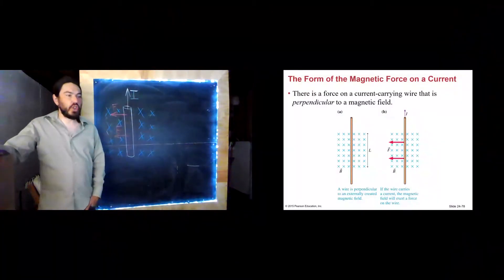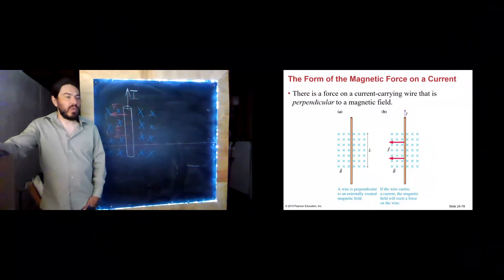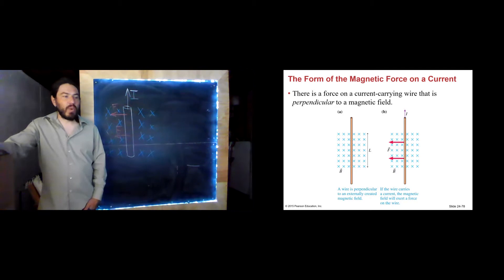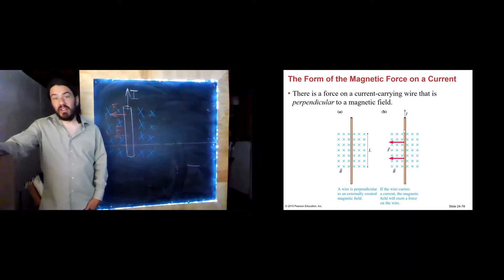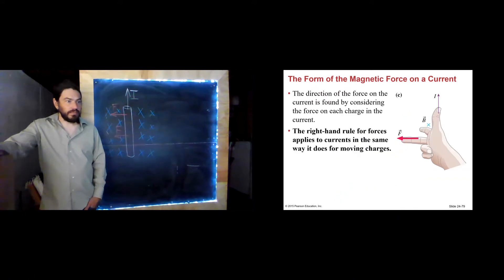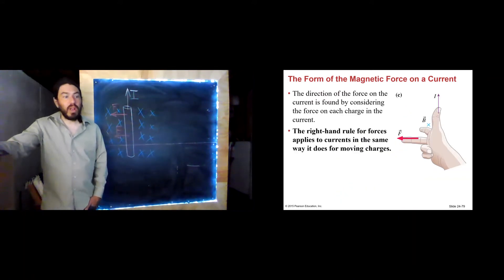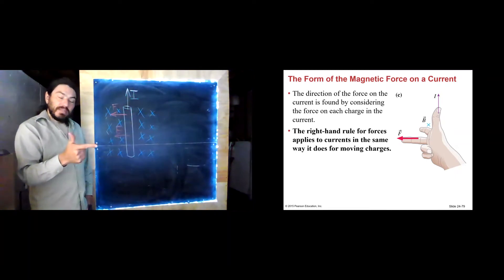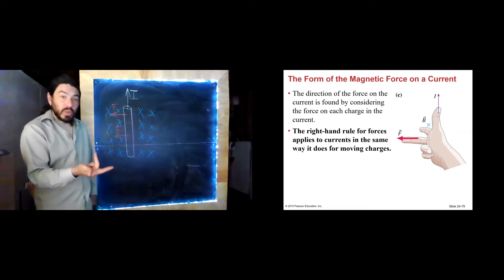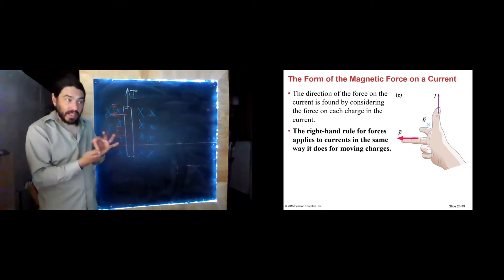It's the same thing I just showed, but a little bit prettier. Here we see a wire in some external magnetic field, and that wire will experience a force, as I just demonstrated. We can use right-hand rule number two to figure out what direction that force is in. Our thumb is the current, our field is represented by our index finger, and the force is our middle finger.